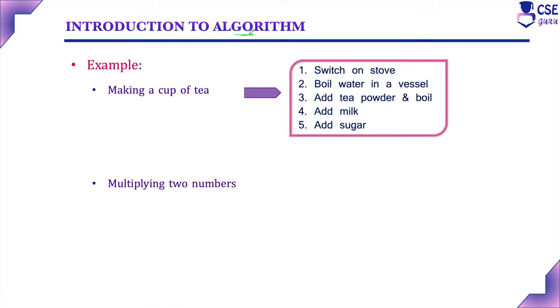For example, we want to make a cup of tea. Consider this as a problem. To solve this problem we need to follow a set of instructions or procedures. First we need to switch on the stove. Next, boil the water in a vessel. Then add tea powder and boil it for some time. Then add milk, then add sugar. These are all the sequence of instructions or procedure we need to follow to prepare a cup of tea.